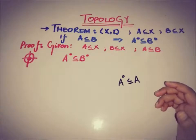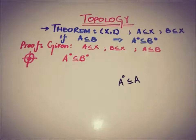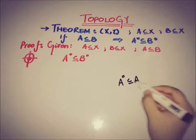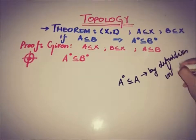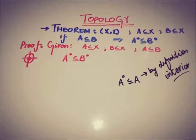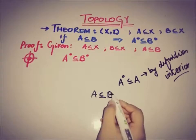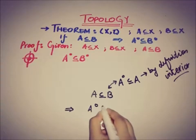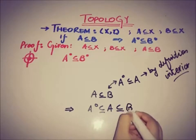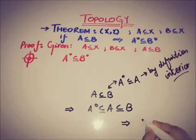As was the case with closure — where the closure is the smallest closed set containing the set — we use the fact that the interior of A is a subset of A. This is the first information from the definition. The second given information is that A is a subset of B. Combining both, we get: interior of A ⊆ A ⊆ B, so interior of A is a subset of B.